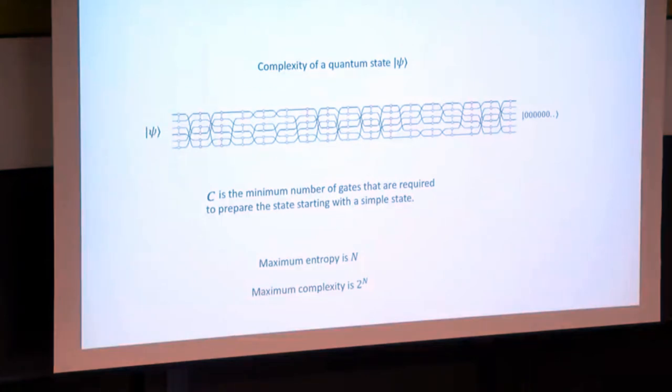Now, the maximum entropy of a system of n bits, or even n qubits, is n. The maximum complexity is 2 to the n. So complexity is a kind of thing which can grow to vastly bigger size than entropy. And that's why it continues to grow for very, very long periods of time after a system has come to thermal equilibrium.